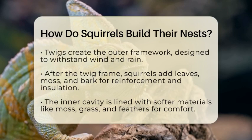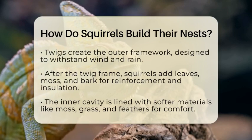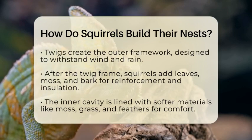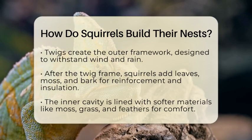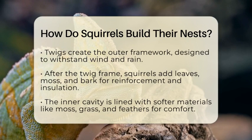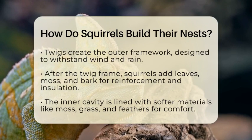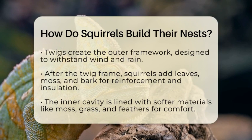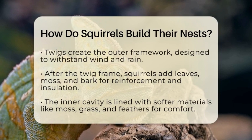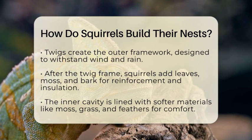Once the twig frame is complete, squirrels add layers of leaves, moss, and sometimes even bark. These materials reinforce the structure and improve insulation, making the nest a comfortable place to stay.